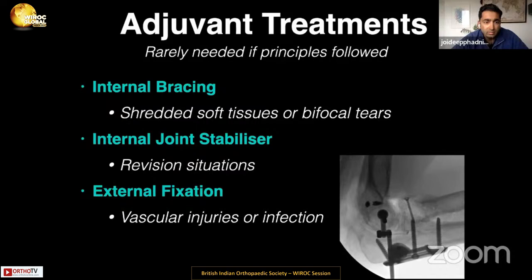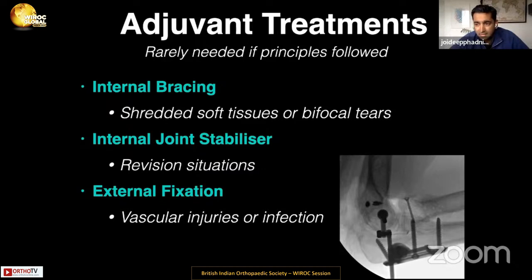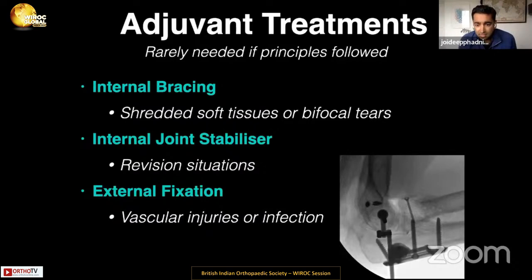Adjuvant treatments include internal bracing, the internal joint stabilizer, and external fixation. I'm a big fan of internal bracing — especially for very large heavy arms, shredded soft tissues, or bifocal tears. It's a synthetic suture with two anchors at the insertion and origin of the ligament, or a proprietary internal brace technique. The internal joint stabilizer is a clever device I use for revision situations or gross instability. External fixation is extremely rare if principles are followed, reserved for infection with instability or vascular injury.